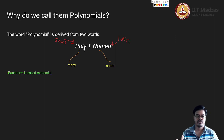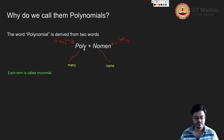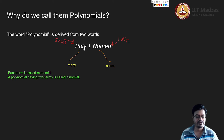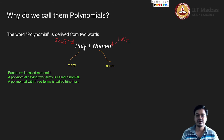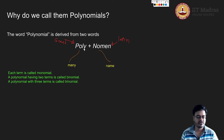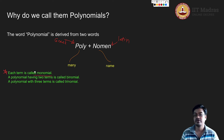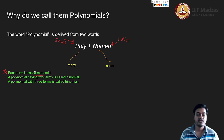Because a polynomial has many terms, each term of the polynomial will be called a monomial. If the polynomial has only two terms, you will call it a binomial. If the polynomial has only three terms, you will call it a trinomial. In general, we will treat them all as polynomials and remember that a monomial is also a polynomial for us. We will not distinguish between monomial and polynomial, though a monomial enjoys some different properties.